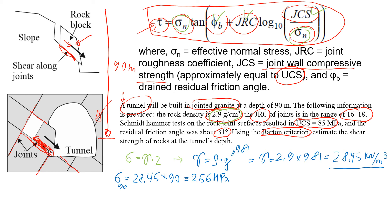And now we estimate the shear strength of that jointed rock mass. Of course it will depend on the normal stress, so the greater the normal stress the greater the shear strength is going to be. So shear strength is - we know that normal stress is 2.56 times tangent of the residual friction angle 31 degrees.